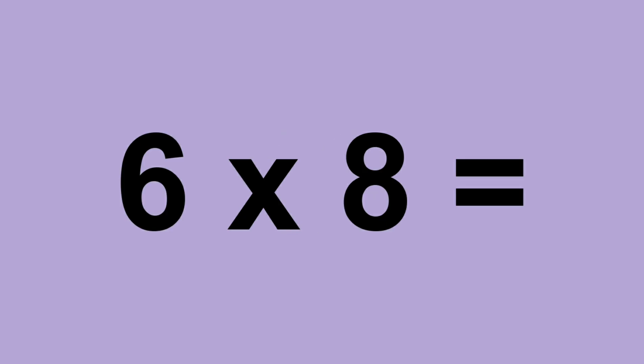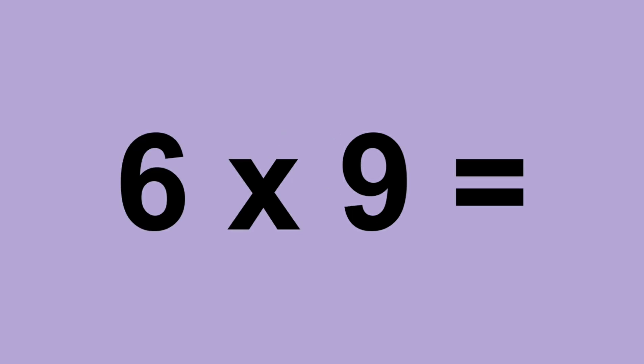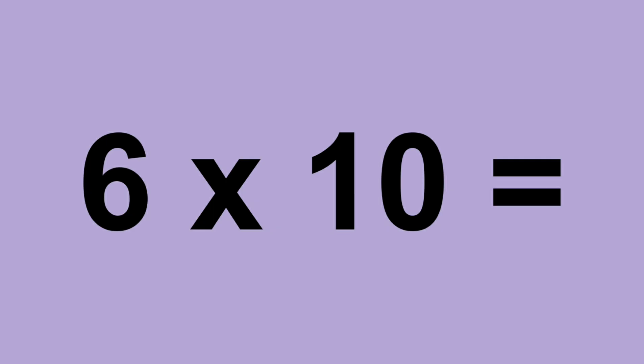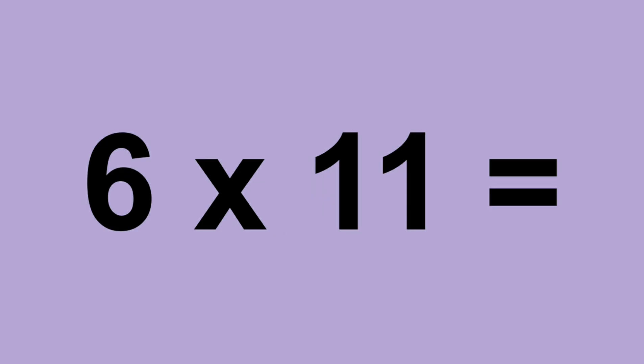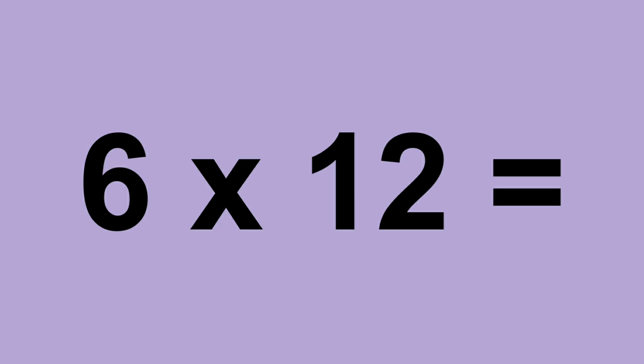Six times eight equals forty-eight. Six times nine equals fifty-four. Six times ten equals sixty. Six times eleven equals sixty-six. Six times twelve equals seventy-two.